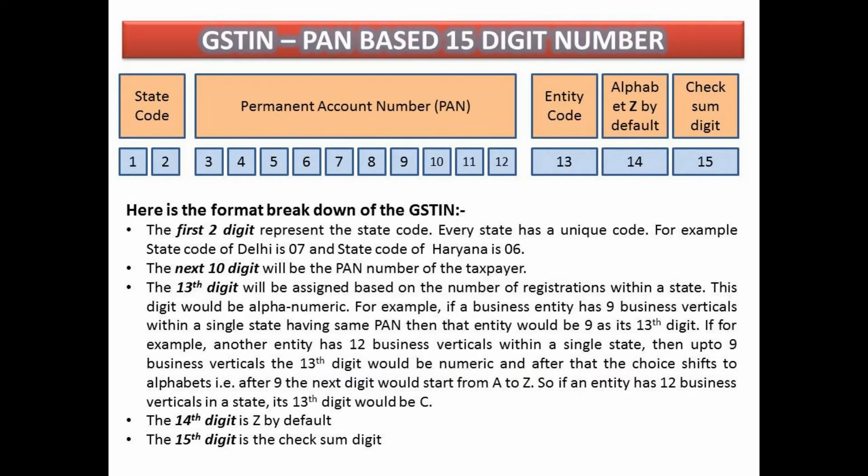The GSTIN is a 15-digit number. The first two digits represent the state code — that is, the code of the state in which the business is to be registered. The next 10 digits represent the PAN of the taxpayer. The thirteenth digit is assigned based on the number of registrations within a state.